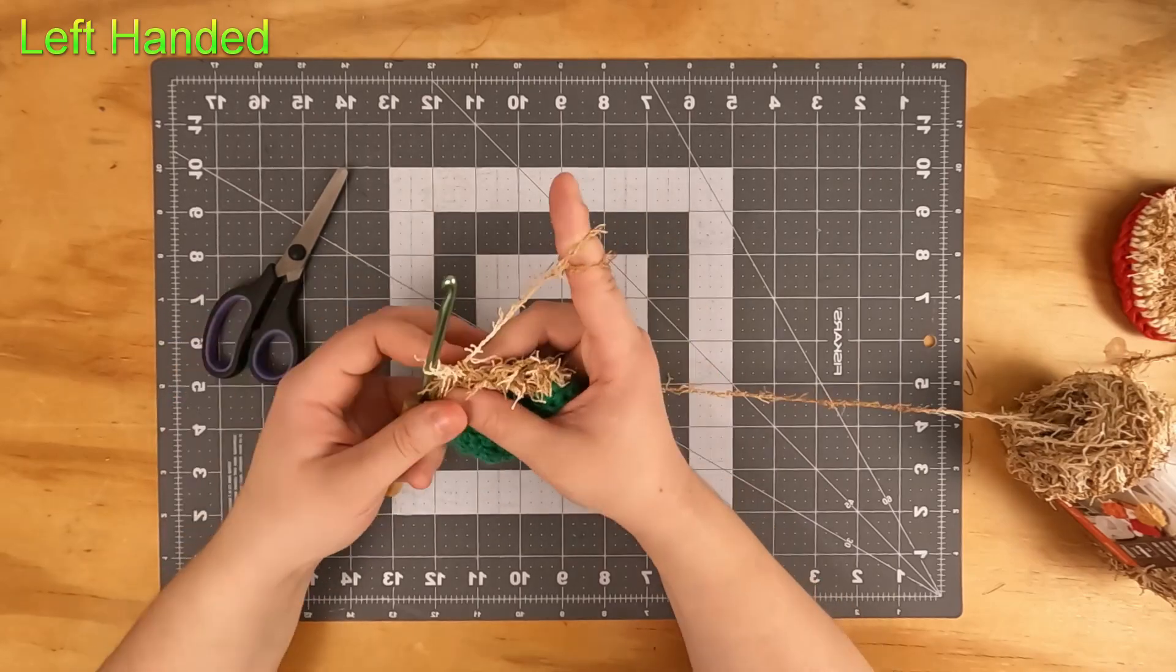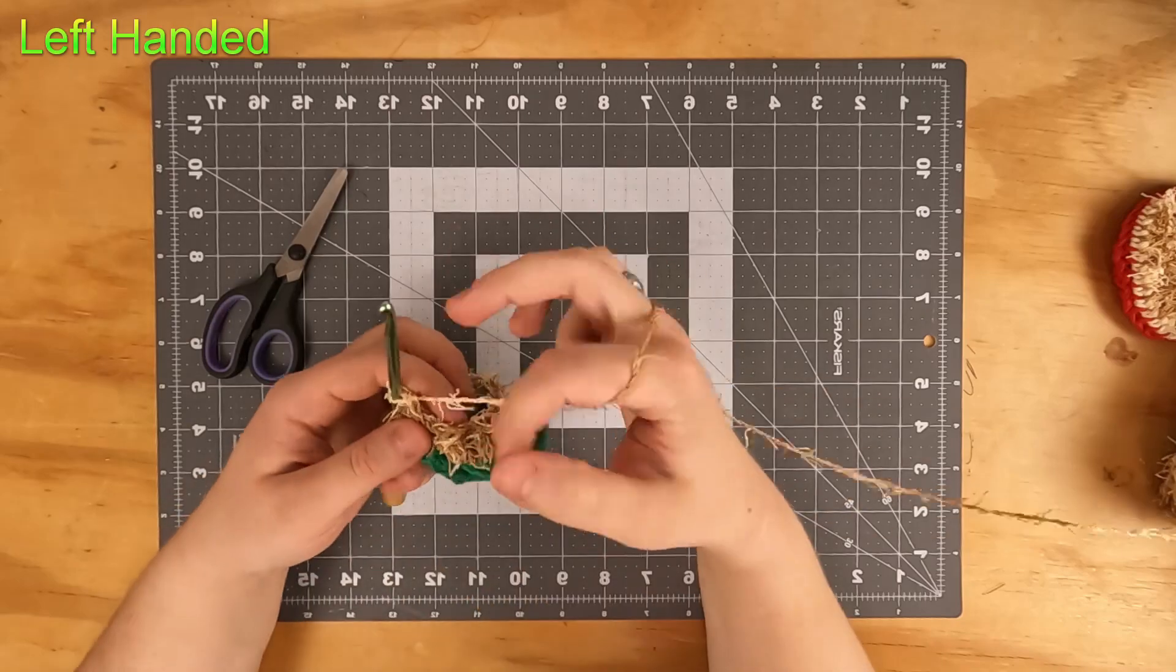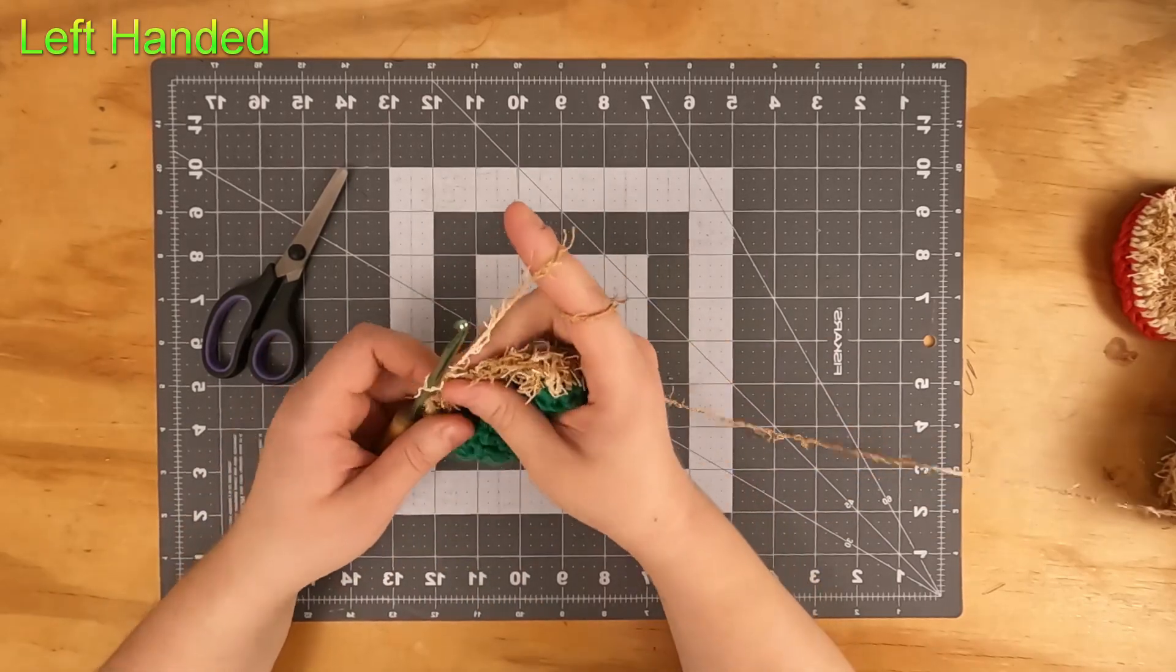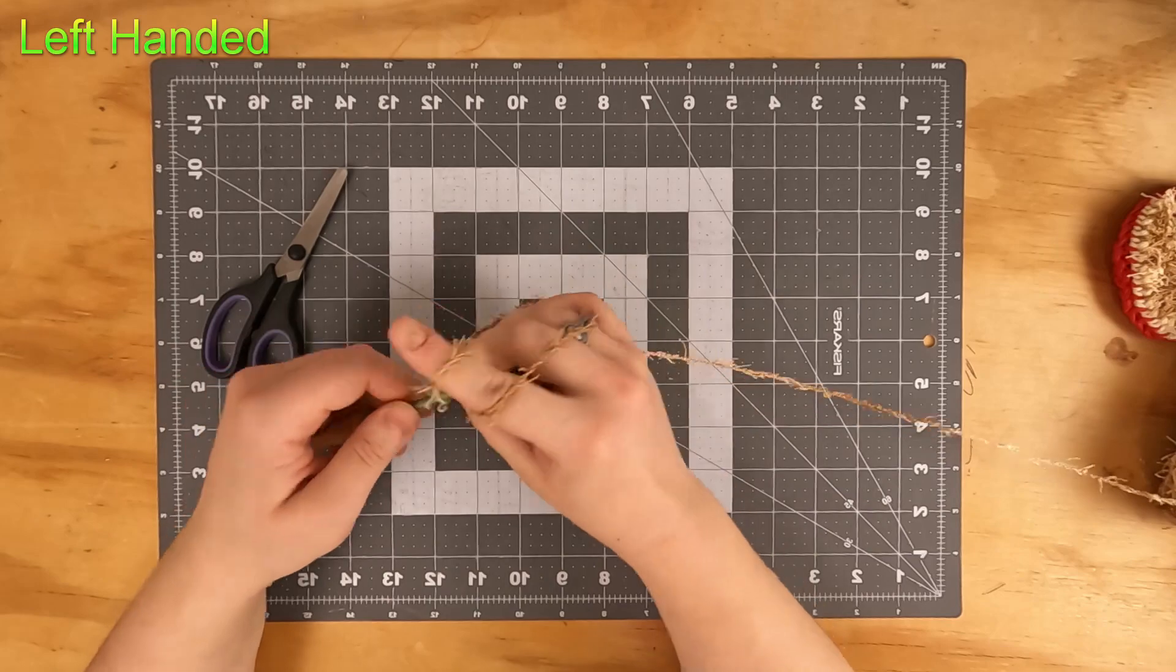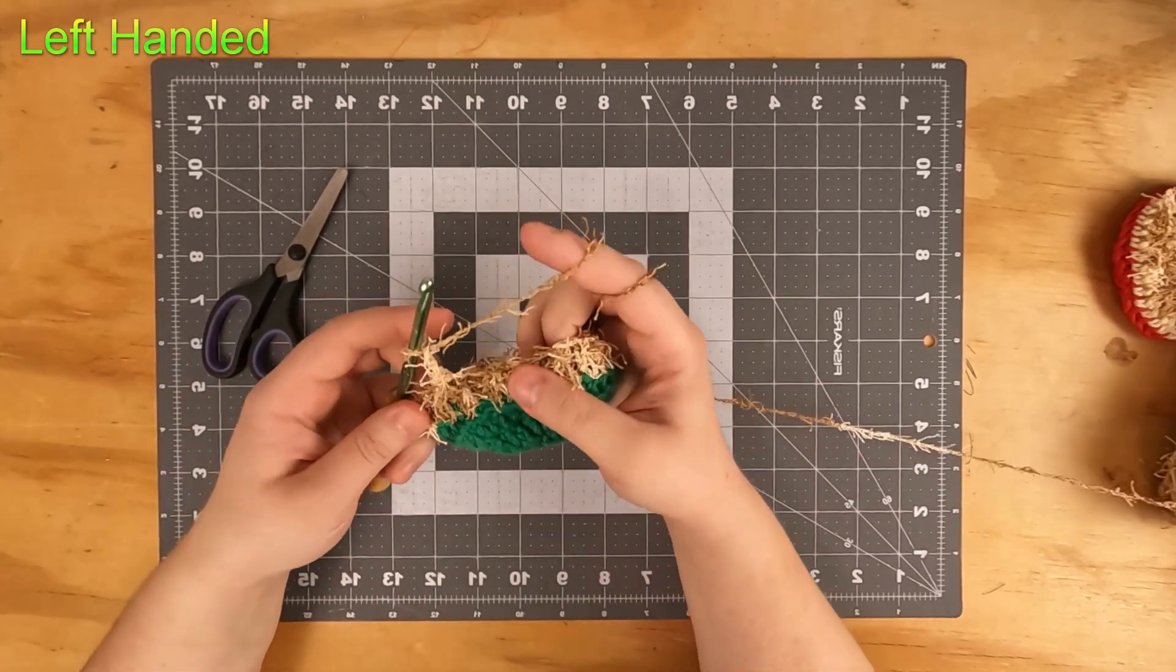If you get the wrong spot it's not the end of the world - it just might be slightly different than maybe you were intending, but either way it should still scrub just fine. Go ahead and chain up two more. This is going to be our last round.